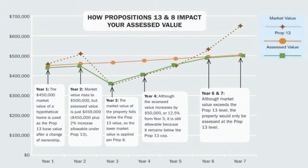In year three, when the property value declined to under $400,000, the Prop 13 value stayed the same. Prop 13 is the cap — the highest they can assess your home — and it goes up 2% per year regardless of what the home value does. So it went up by another almost $10,000, because we're adding 2% of the $459,000 from year two. The orange line with the circles is a straight line that continues to get a 2% increase per year.